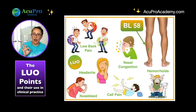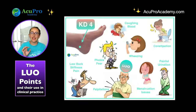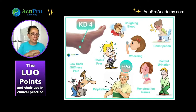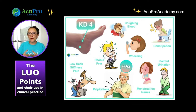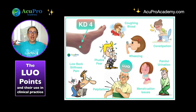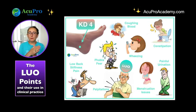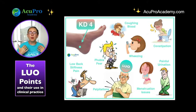On the emotional side, kidney and bladder relate to fear in Chinese medicine. KD4 is a really good point for phobias. Whether it's agoraphobia, fear of small spaces making it impossible to take an elevator, or germaphobia, KD4 and BL58 together are great because phobias are usually longstanding. This combination is really good for releasing them.